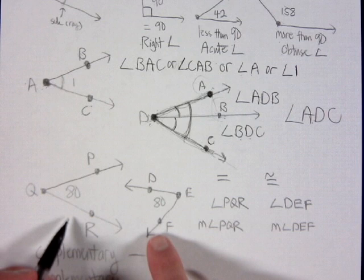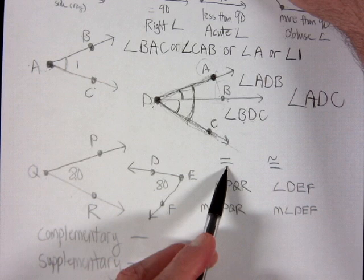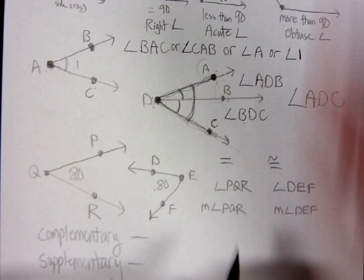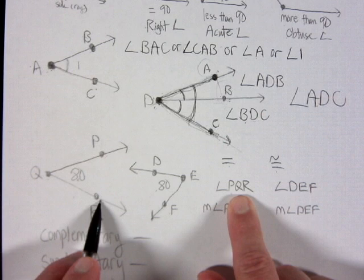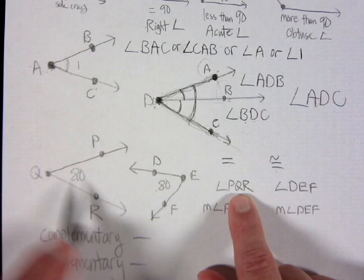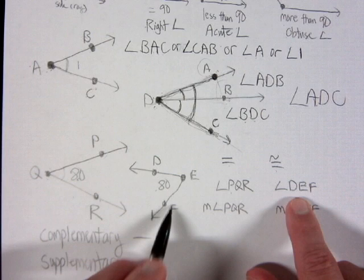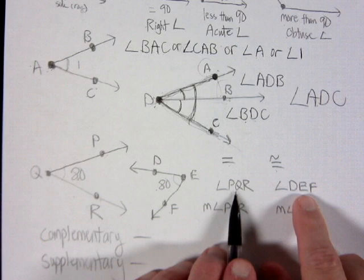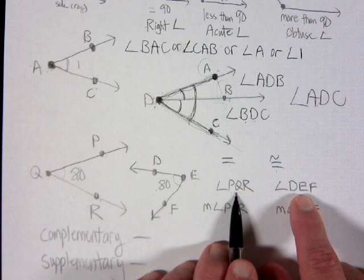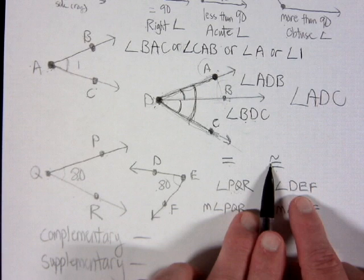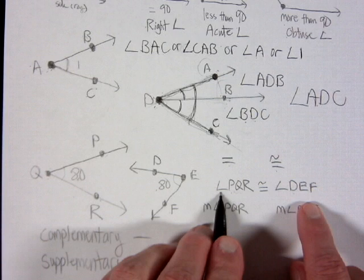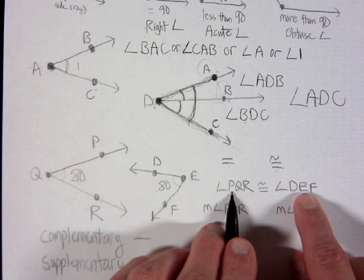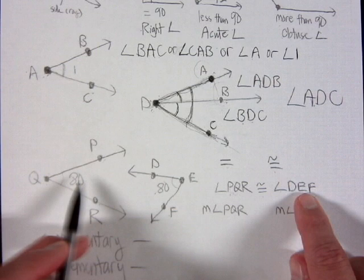Here I have two separate angles, both measuring 80 degrees. Remember: equal is used for numbers, congruent is used for objects. Angles are objects, so I would say angle PQR is congruent to angle DEF. Q is the vertex of angle PQR — you can trace it out — and angle DEF is also 80 degrees.